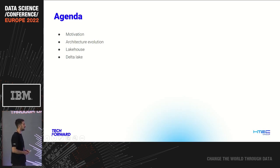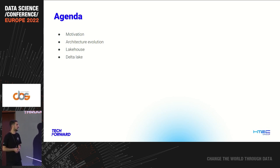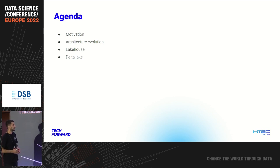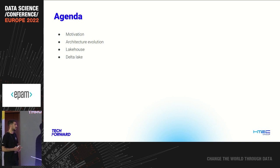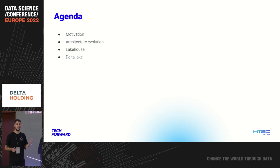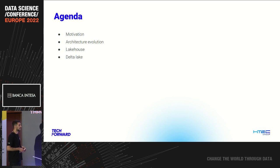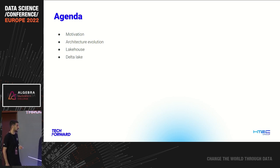So first of all, we will start with the motivation — what is behind the lakehouse, or what challenges we think we can solve just by switching to the lakehouse. Then a small architecture evolution: what is the two-tier architecture from my perspective, what challenges it was solving, and also what we get from switching to the lakehouse. Afterwards we will speak about the lakehouse itself, with the main focus on the Delta Lake open file format — how it works, what it brings to the table, and a little bit under the hood of its structure.